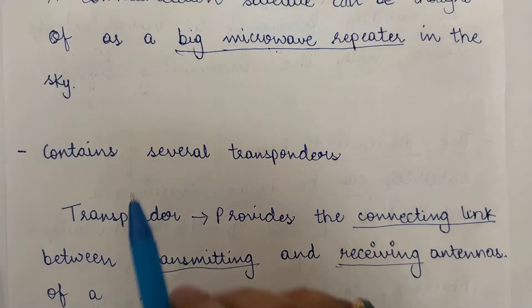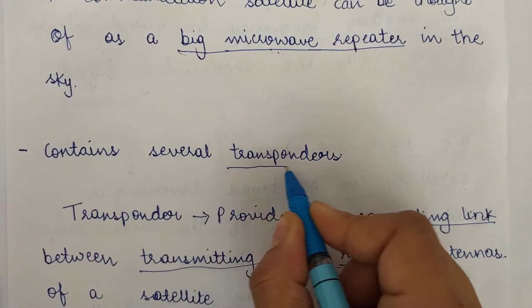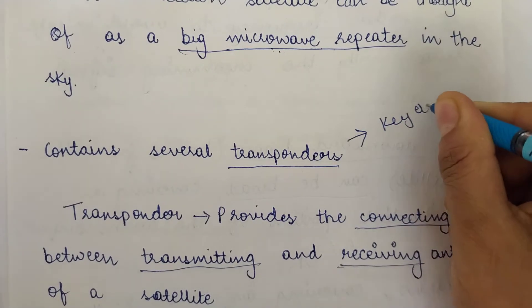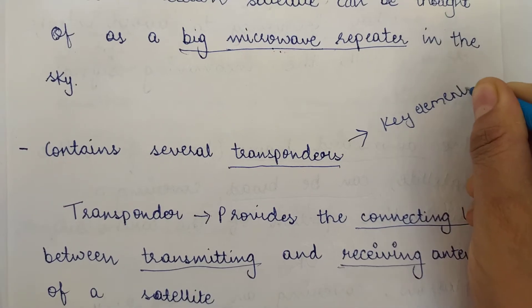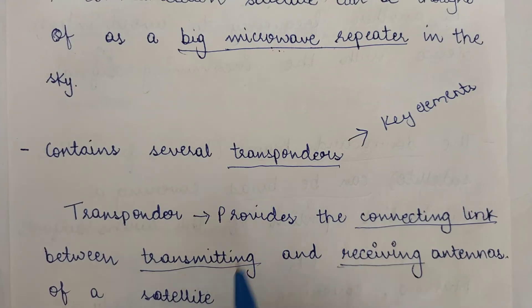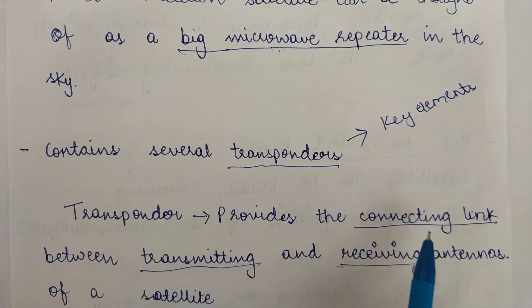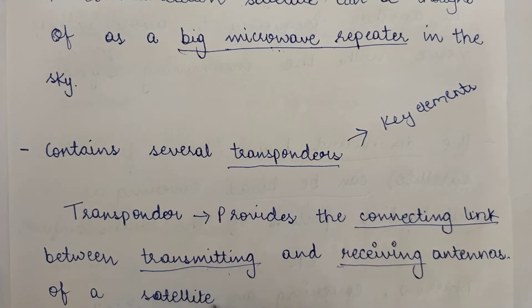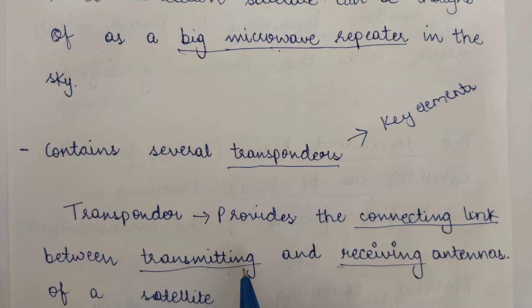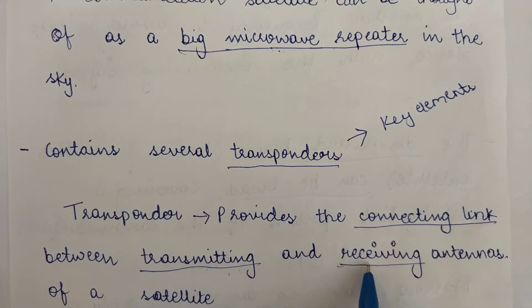What does a communication satellite contain? It contains several transponders. Transponders are the key elements of any communication satellite. A transponder basically provides the connecting link or communication link between the transmitting and receiving antennas of a satellite. All these satellites have antennas to transmit and receive data, and it is with the help of these transponders that those antennas can transmit and receive signals.